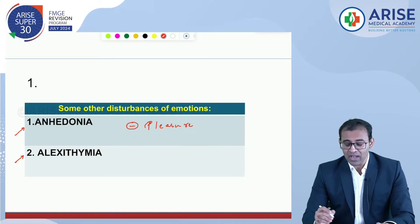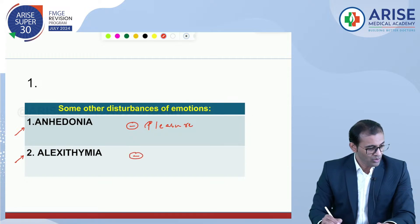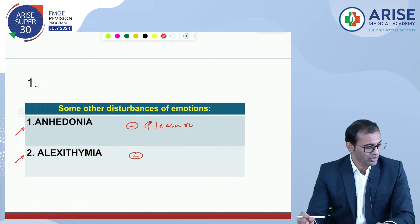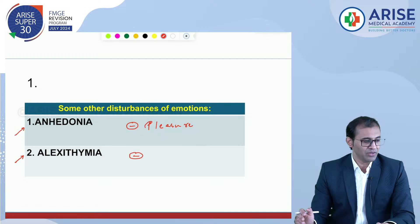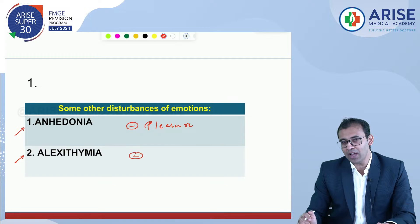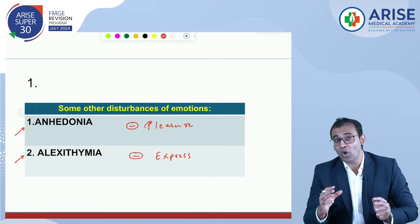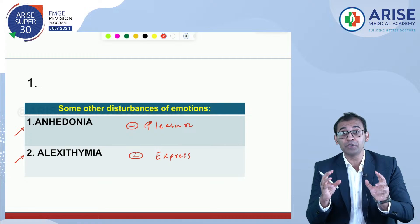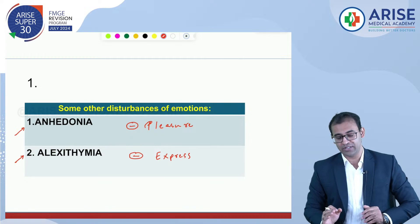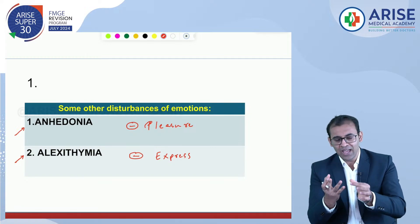The second important term is alexithymia — when a person is not able to express and understand the emotions of others due to lack of words. In psychiatry, one or two one-liner questions on anhedonia and alexithymia are expected for sure.